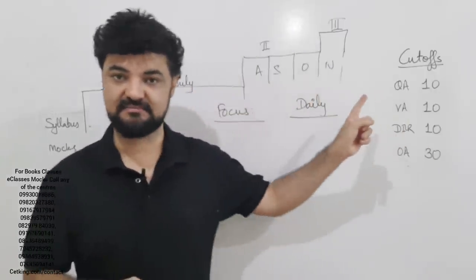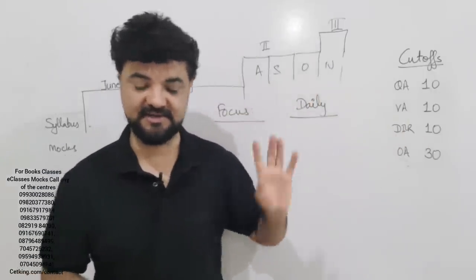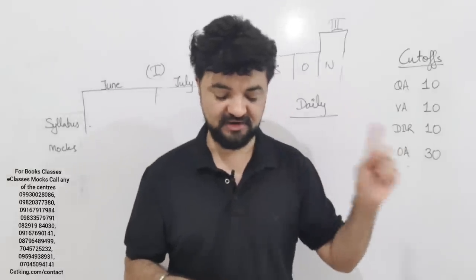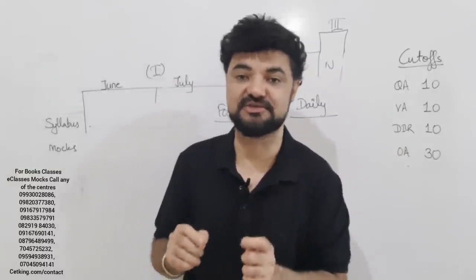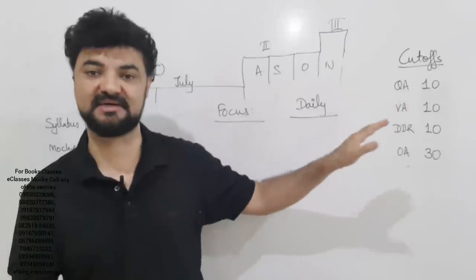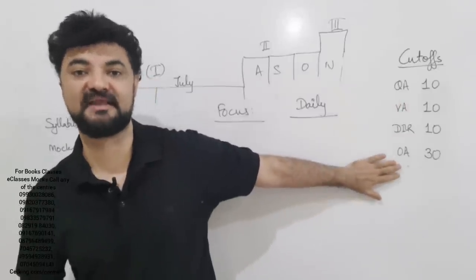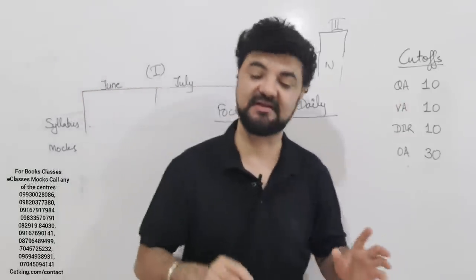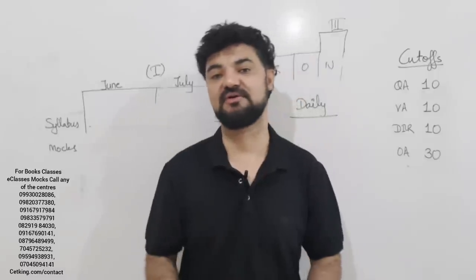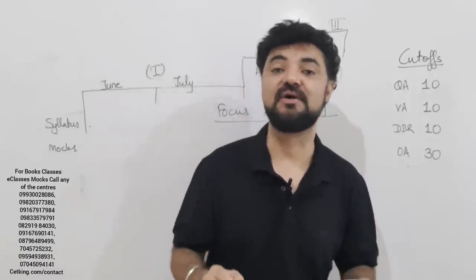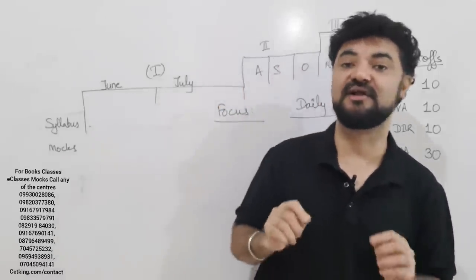So, target wise, 10, 10, 10, 30. Quant, verbal, DI logic. Get me 10, 10 question correct. Mark wise, 30 marks, 30 marks, 30 marks, and overall 90 plus marks. In the new pattern CAT paper, I can promise you IIM call. I can guarantee you IIM call irrespective of your academic record.